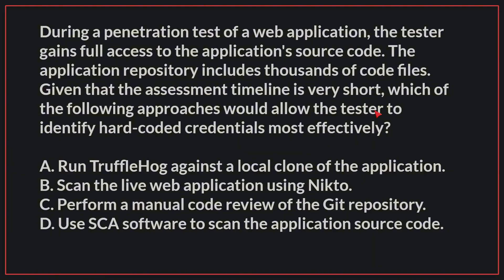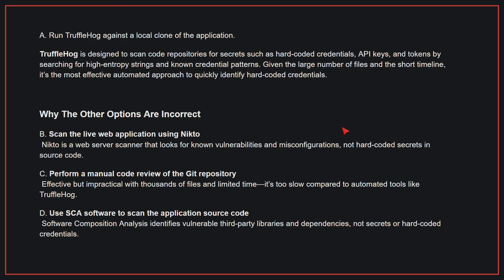During a penetration test of a web application, the tester gains full access to the application's source code. The application repository includes thousands of code files. Given that the assessment timeline is very short, which of the following approaches would allow the tester to identify hard-coded credentials most effectively? The correct answer is A: run TruffleHog against a local clone of the application. TruffleHog is designed to scan code repositories for secrets such as hard-coded credentials, API keys, and tokens by searching for high-entropy strings and known credential patterns. Given the large number of files and the short timeline, it's the most effective automated approach to quickly identify hard-coded credentials.